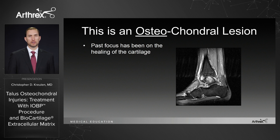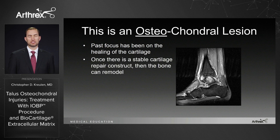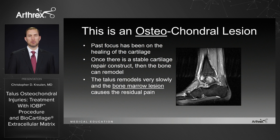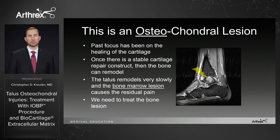First let's review what an osteochondral lesion is. In the past, the focus has been on the healing of cartilage, and we felt that once there was a stable cartilage repair construct, the bone would be able to remodel on its own. But what we've learned is that the talus remodels very slowly and people can develop bone marrow lesions that cause residual pain and can inhibit a patient's rehabilitation. So we need to address the bone as well as the cartilage.